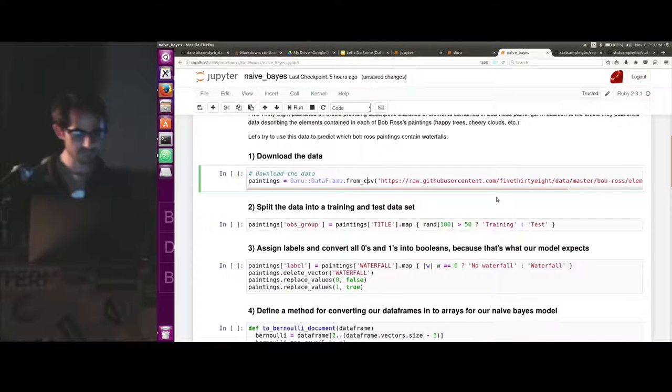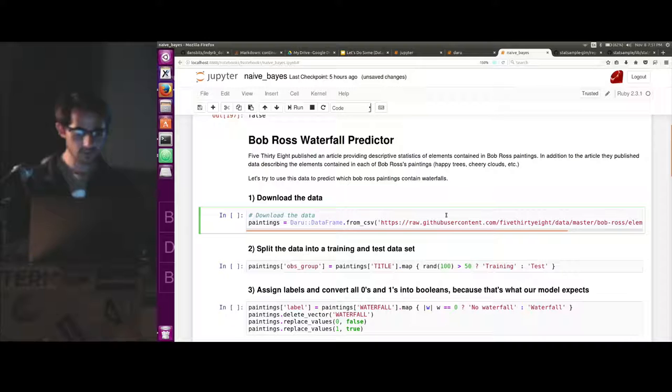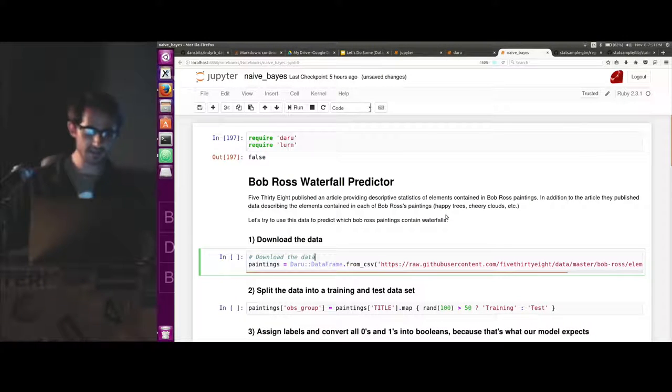and then Learn is a machine learning gem. One of them, there are many. So just to keep things interesting, I found some Bob Ross data, where someone has gone through and labeled each Bob Ross painting that he ever did with the elements that are in that painting.